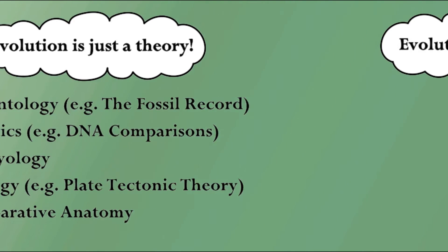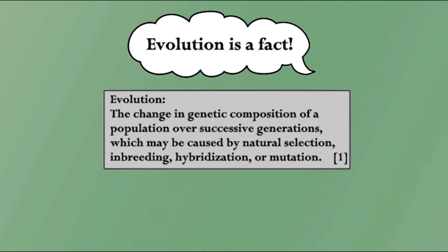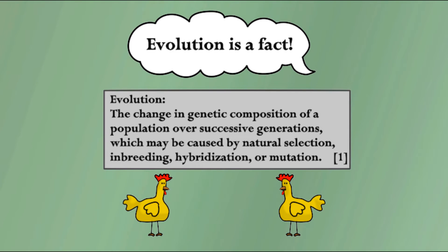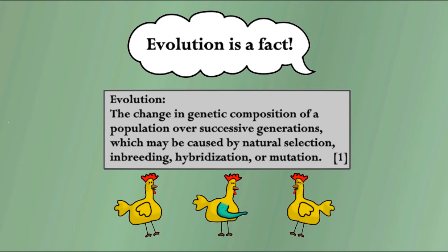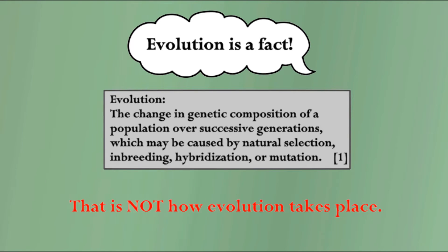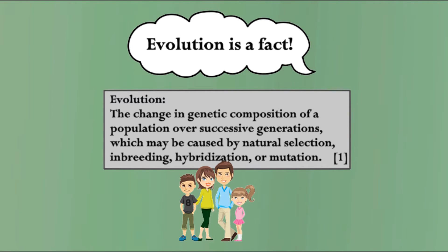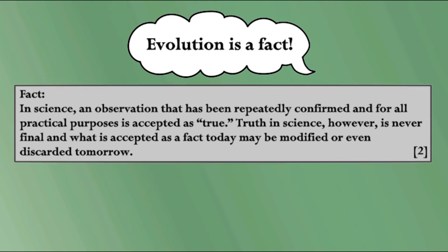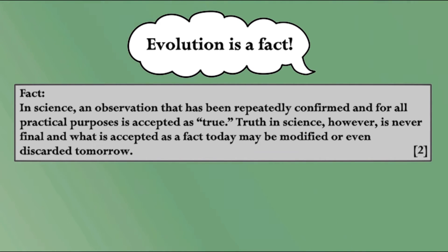What about the statement 'evolution is a fact'? To glance back at our definition, it just describes a general process with no specific claims attached. This description of change doesn't mean mutations like extra arms, fins, or feathers just showing up out of nowhere — it pertains to the subtle changes that occur that differentiate offspring from their parents. This is plainly evident even in yourself: although you may have your mother's eyes, you aren't a genetic duplicate. Pretty much everyone has many minor mutations that create differences between them and their ancestors. A scientific fact is an observation that has been repeatedly confirmed and for all practical purposes is accepted as true. Truth in science, however, is never final — what is accepted as fact today may be modified or even discarded tomorrow.